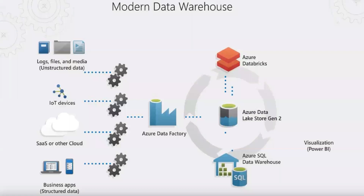Here is another diagram of modern data warehouse showing data from a variety of sources like IoT devices, log files, media, and unstructured data. The main difference from traditional is that in traditional you can only ingest structured data, whereas here you have structured, unstructured, and semi-structured sources. Using Azure Data Factory you can ingest data into Azure Data Lake Storage, use Azure Databricks to prepare the data for different teams, and then do reporting using Power BI.